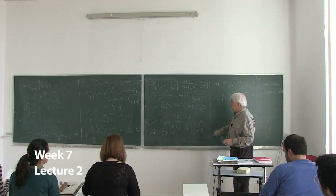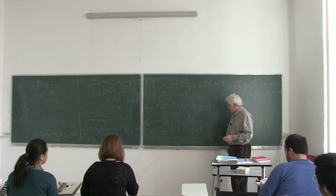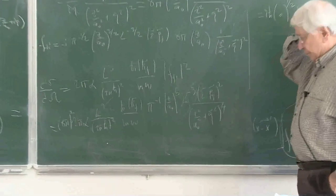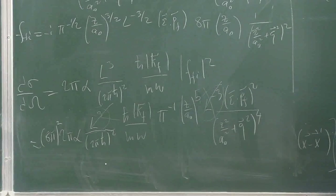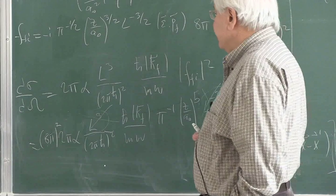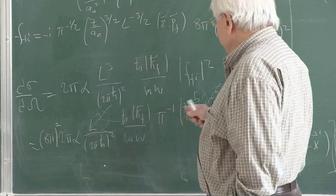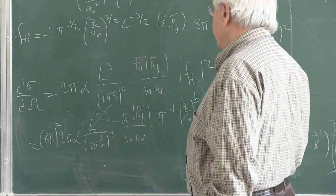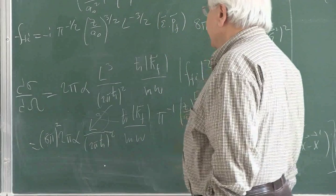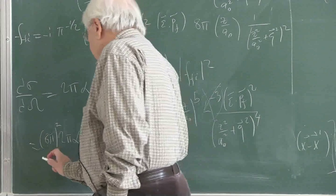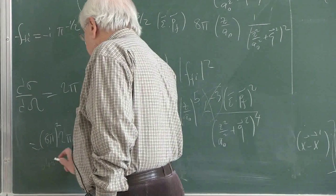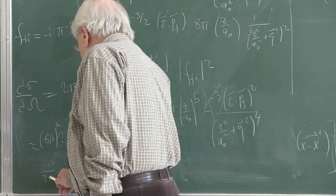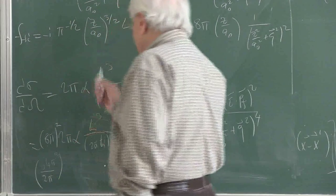We have this expression, which is the differential cross-section. Let's check the dimensions first — the physical dimensions — and see whether everything is correct. Perhaps a little bit of simplification: there is 64 pi squared in here, there is a 2 pi, but there is a 4 pi squared down here, so it is 2 pi. The pi's are taken care of this way.